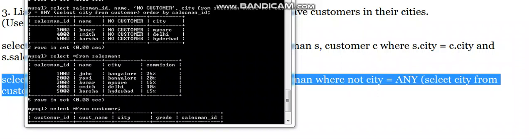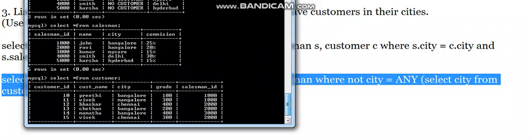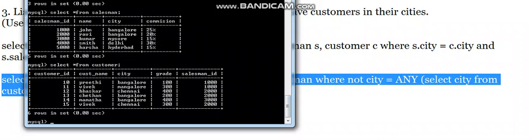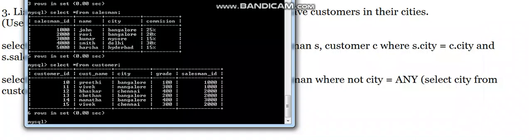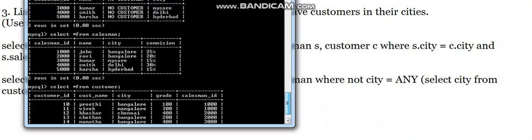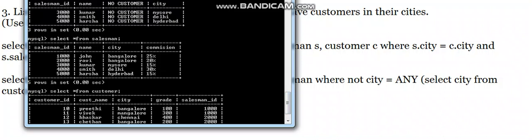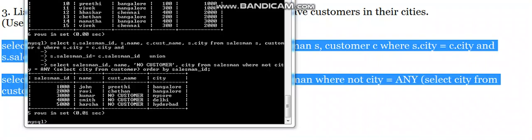After executing, we get Kumar, Smith, and Harsha, who don't have customers from Mysore, Delhi, and Hyderabad respectively. Kumar is from Mysore but his customer is from Bengaluru, so NOT city finds the mismatch. Smith and Harsha don't have any customers at all, so they also appear in the results. Using UNION, we join both query results to show all salesmen with and without customers in their cities.